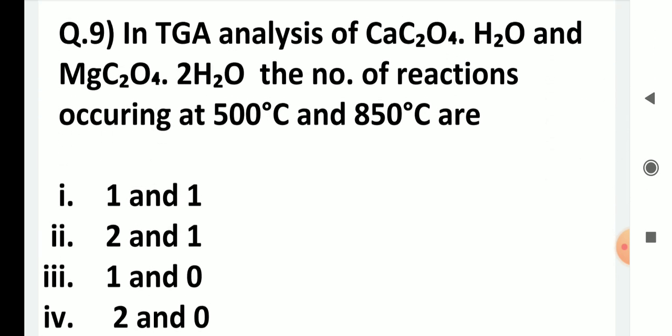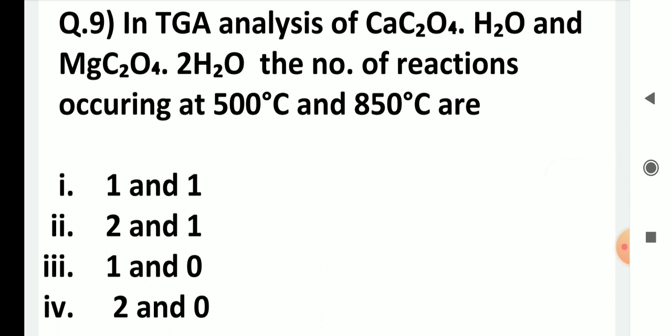In TGA of calcium oxalate monohydrate and magnesium oxalate dihydrate, the number of reactions occurring at 500°C and 850°C are: 1 and 1, 2 and 1, 1 and 0, or 2 and 0? At 500°C, both calcium oxalate and magnesium oxalate will react, giving 2 reactions. At 850°C, only the residue from calcium oxalate will react, giving 1 reaction. The answer is 2 and 1 — the second option.